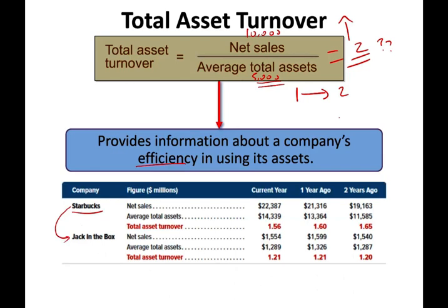Looking at Starbucks versus Jack in the Box: Starbucks' asset turnover this year is 1.56, compared to 1.60 last year and 1.65 the prior year — so Starbucks is deteriorating in asset turnover efficiency. Comparing Starbucks to Jack in the Box, Starbucks generates $1.56 for every dollar in assets, while Jack in the Box generates $1.21. To improve asset turnover, you can increase sales, reduce assets, or both — generating more sales with fewer resources increases efficiency.